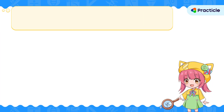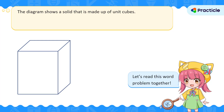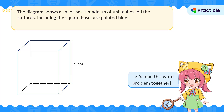Ready to solve this 2025 PSLE math question on volume? We have a solid made up of tiny unit cubes. What is this solid? It's a cuboid. Let's add in some lines to help us see the insides better. All the surfaces, including the square base, are painted blue.